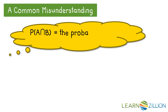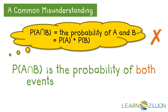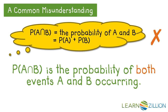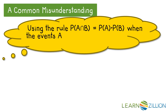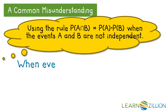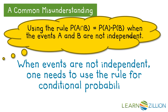A common misunderstanding is to think that the probability of A and B means the probability of A plus the probability of B. But the probability of A and B really means the probability of both events A and B occurring. Another common misunderstanding is to use this rule when the events are not independent — when events are not independent, one needs to use the rule for conditional probability.